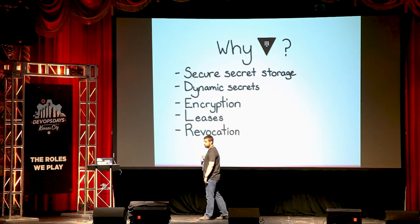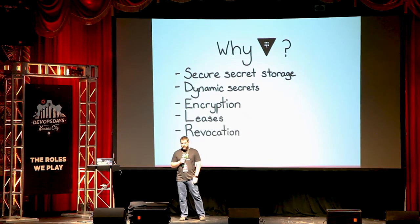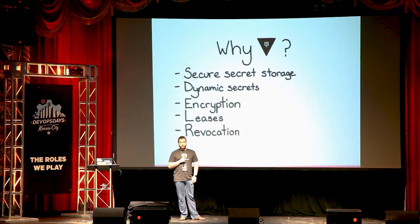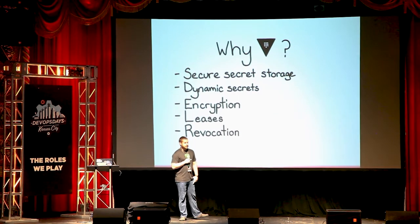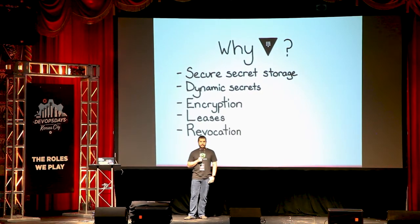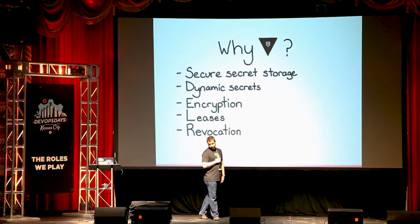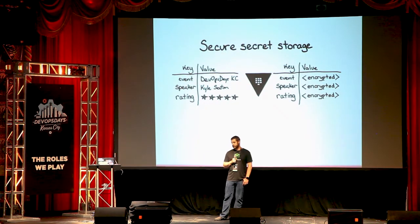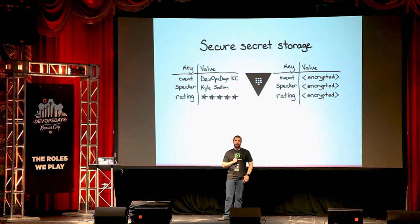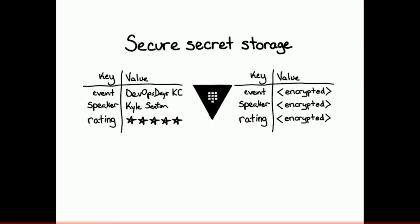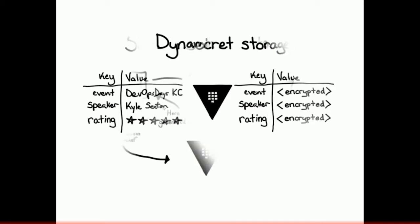So why should you look at HashiCorp Vault? It's going to give you secure secret storage, dynamic secrets, encryption, leases, and lastly, revocation. Vault's secure secret storage — you can think about that as an encrypted key-value store. If you've used Redis or things like that, that's kind of where this falls in. It's just an encrypted way to store key values.